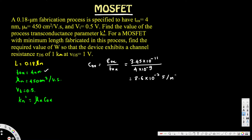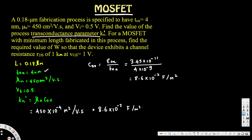Now we plug Cox into the kn prime equation. We have μn equal to 450 centimeter squared per volt-second, but Cox is in meter squared, so we convert μn by multiplying by 10 to the minus 4, giving units of meter squared per volt-second. Multiplying by 8.6 times 10 to the minus 3 farads per meter squared gives us kn prime equal to 387 microfarads per volt-second — that is the transconductance parameter.